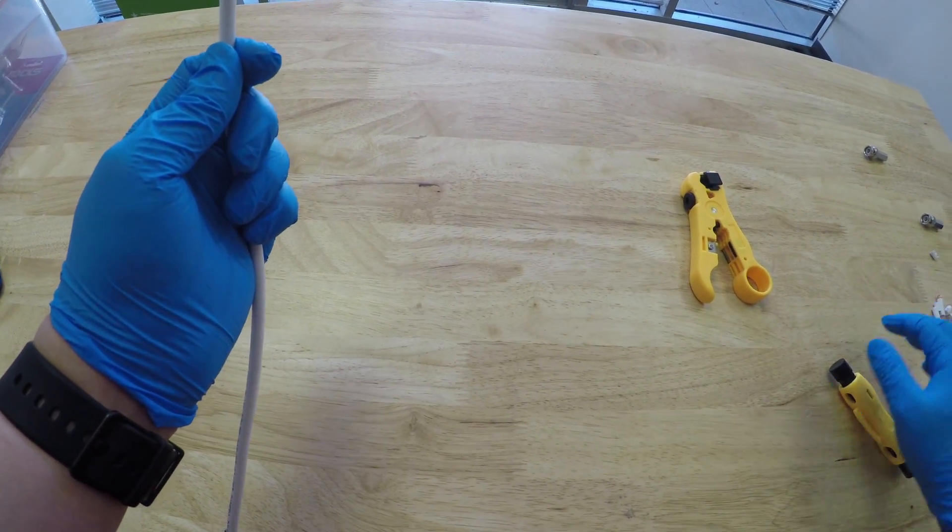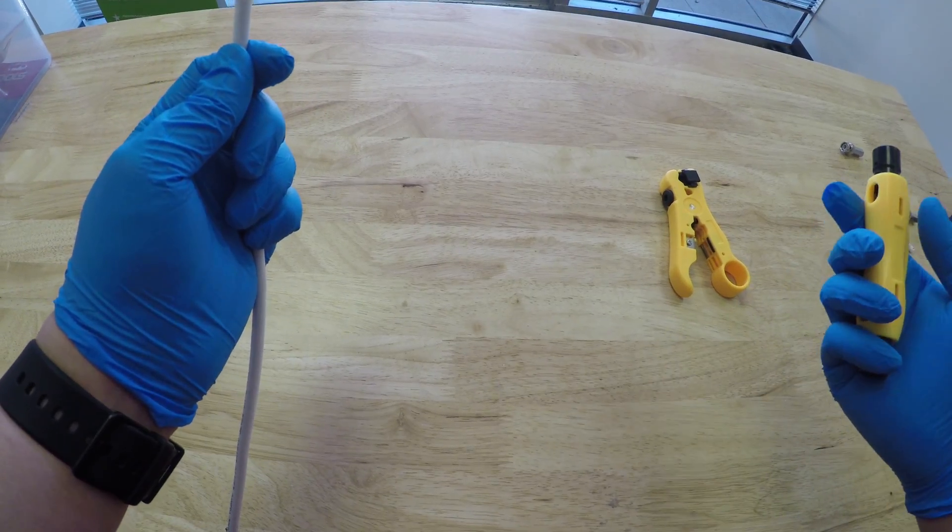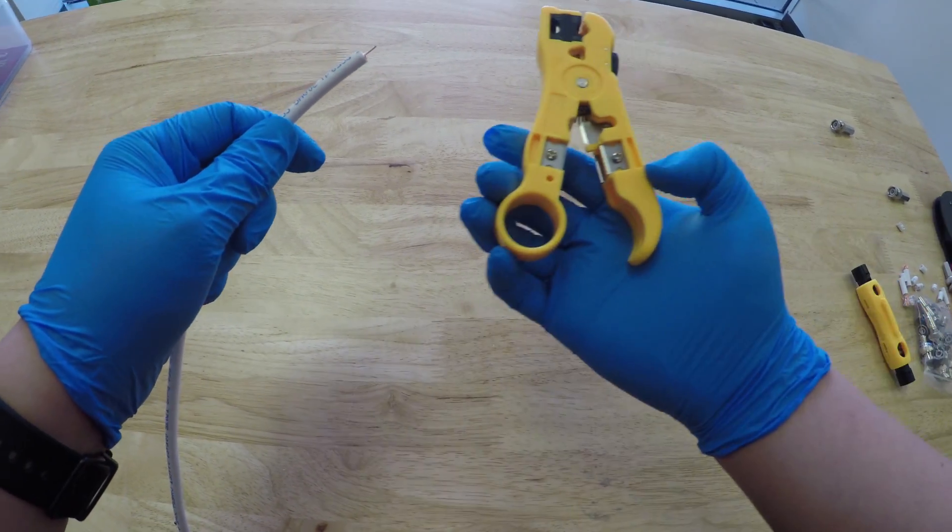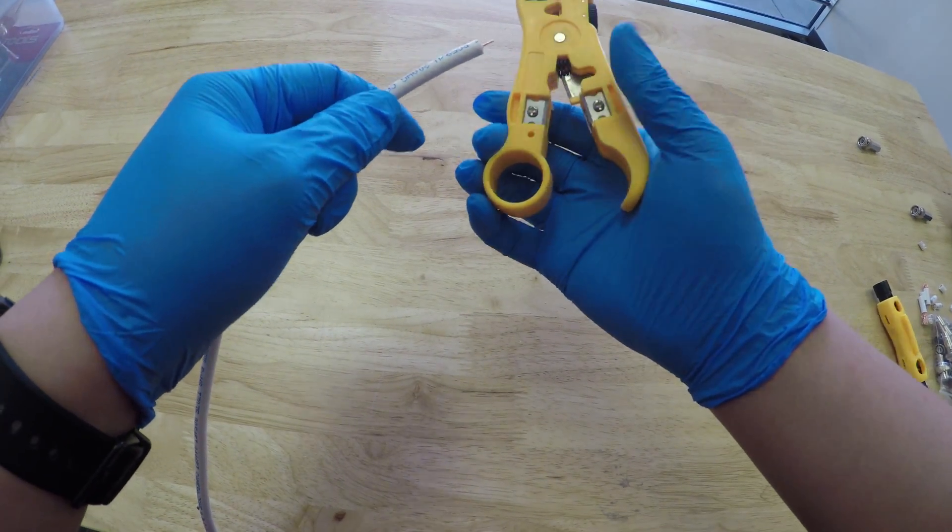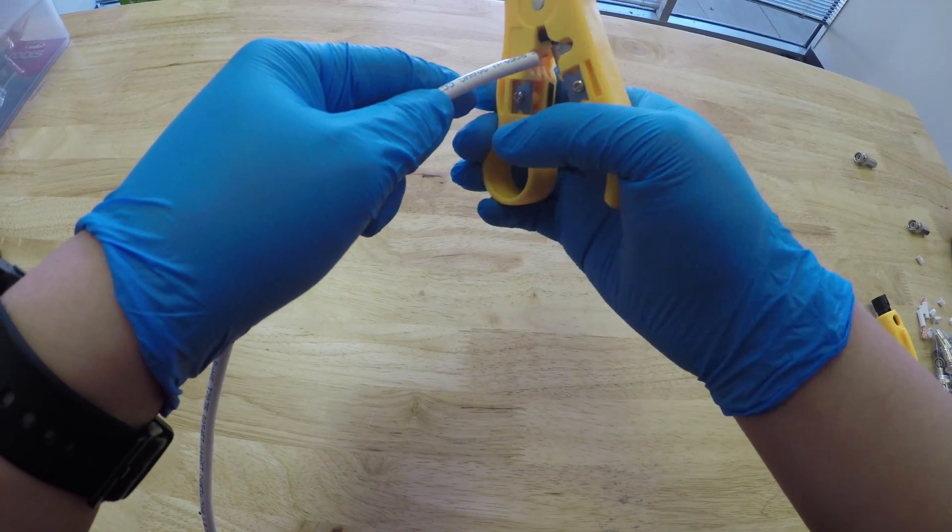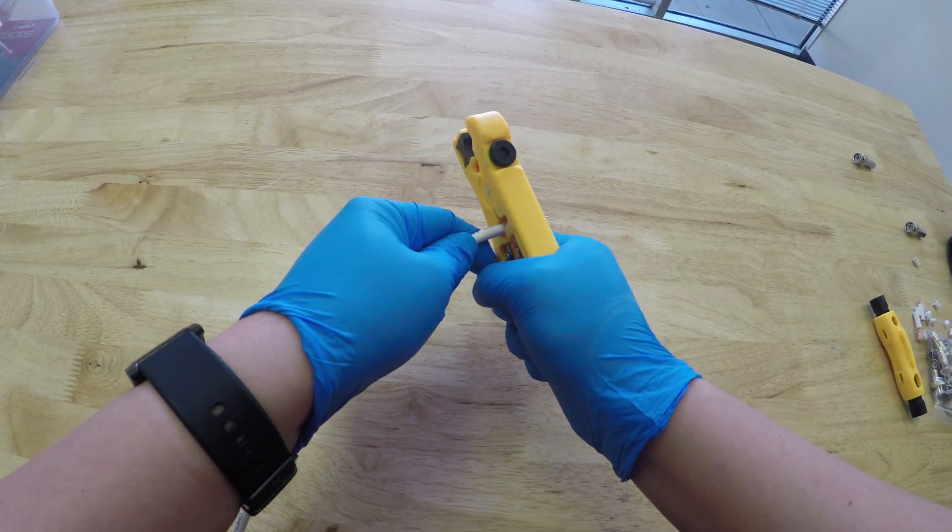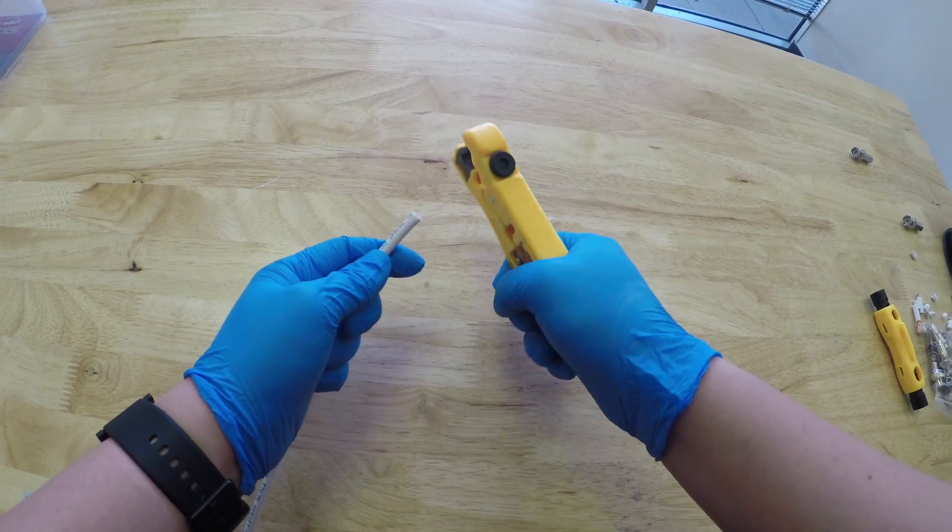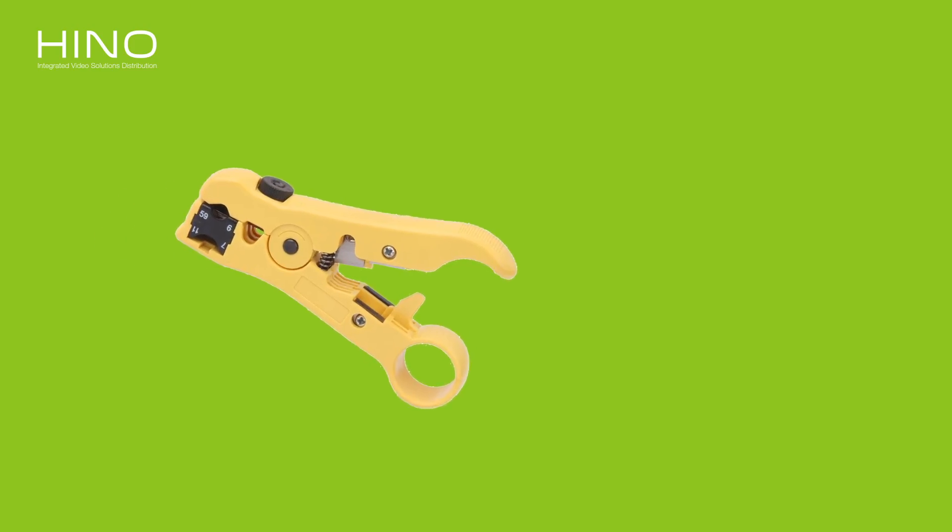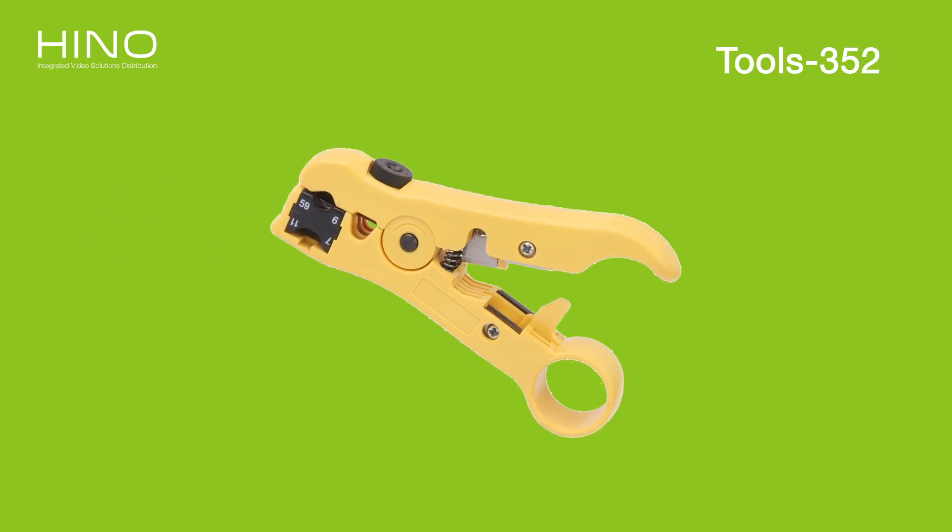Now let's move on to the other cable stripping tool. Let's first cut off the excess part. With this tool you'll notice this black piece is rotatable - you can choose between RG59 or RG11 cables.